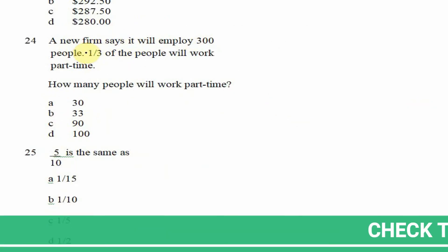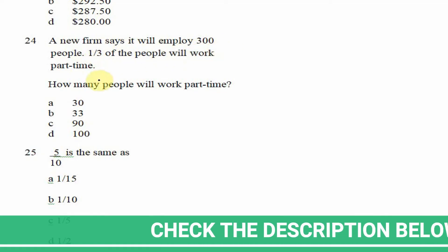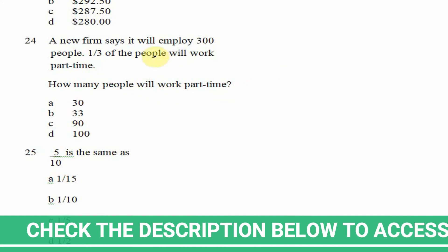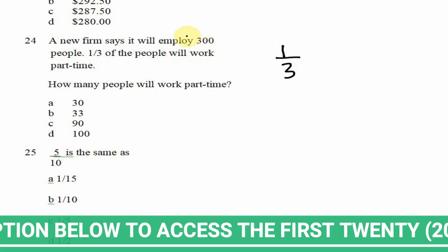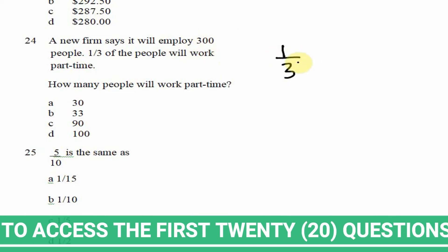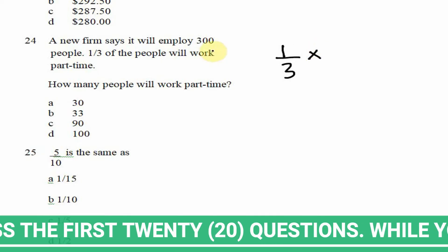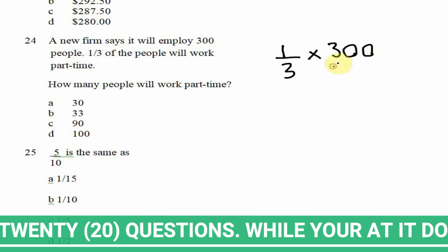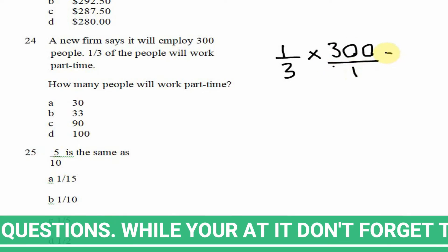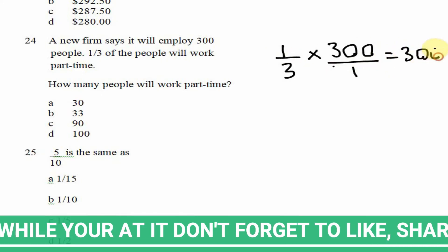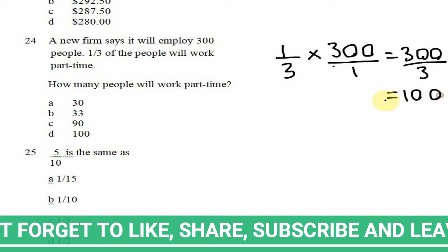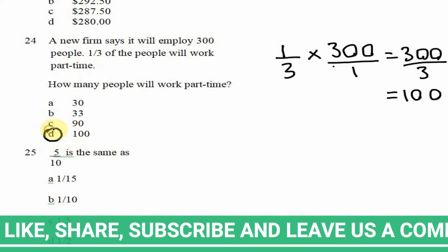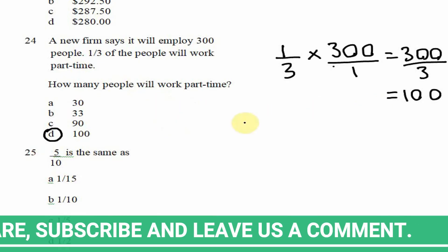Now looking at question 24: a new firm says it will employ 300 people; one third of the people will work part-time. How many people will work part-time? We must find one third of 300. One third of 300 is 1/3 × 300/1. 1 × 300 = 300, 3 × 1 = 3; three into 300 goes 100 times. So 100 people will be working part-time.